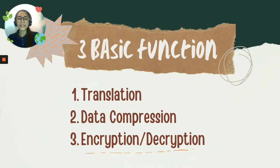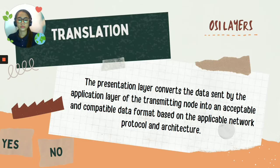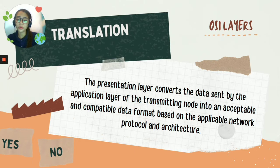The presentation layer has three basic functions. First is translation, second is data compression, and third is encryption or decryption. For translation, the presentation layer converts the data sent by the application layer of the transmitting node into an acceptable and compatible data format based on the applicable network protocol and architecture.